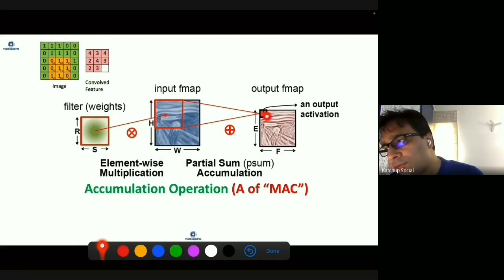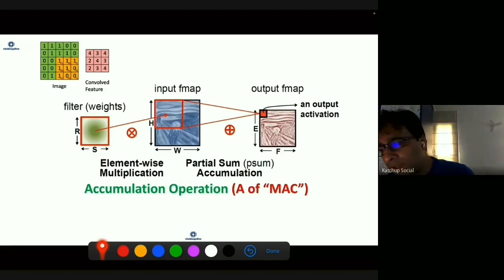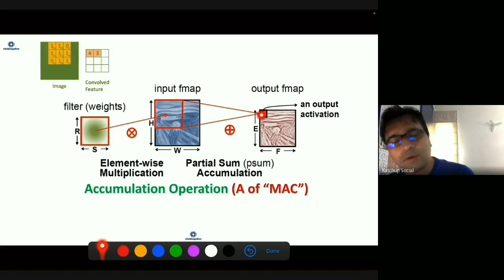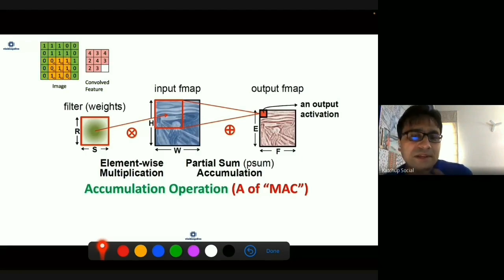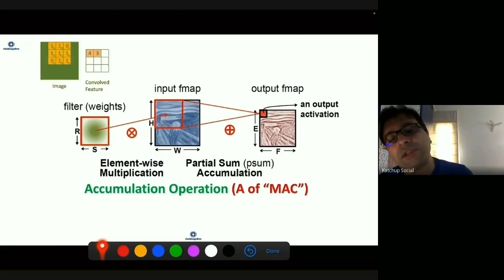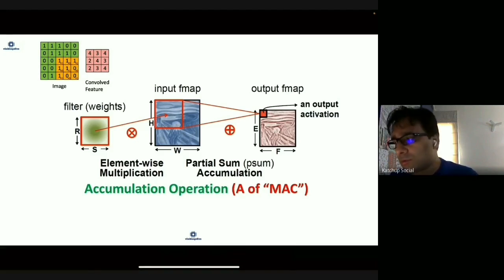For every output you do a certain set of multiplication and addition operations. The complexity of the algorithm is calculated in terms of how many multiplications and additions, or MACs, you do in a neural network, and how fast you can do those MACs determines how fast your algorithm can learn or perform inference.